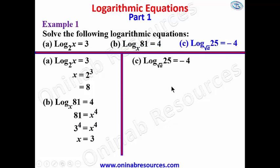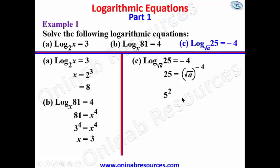For part c, we have log 25 to base root a is equal to negative 4. Applying the same law, 25 equals square root of a to the power of negative 4. We express 25 in index form as 5 squared, and root a as a to the power of half, raised to the power of negative 4. Applying the law of indices, half times negative 4 gives us a to the power of negative 2.